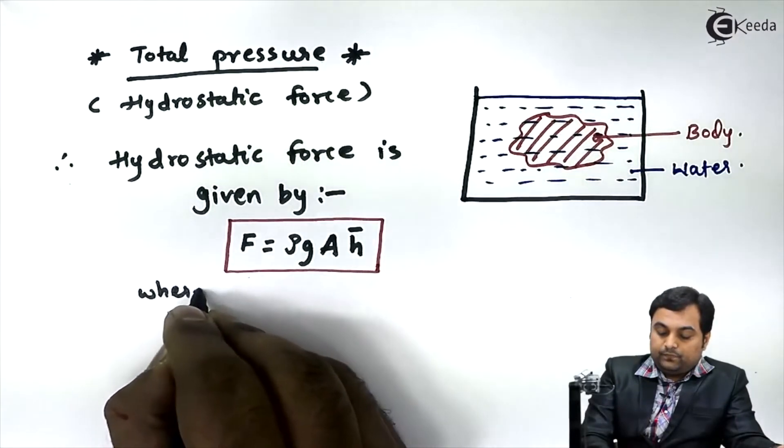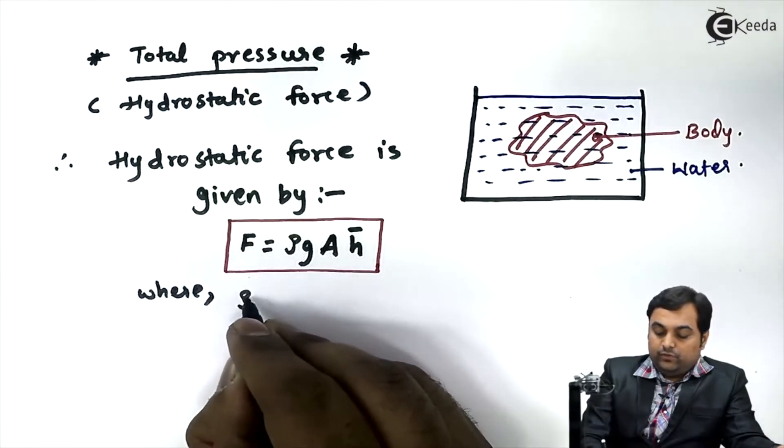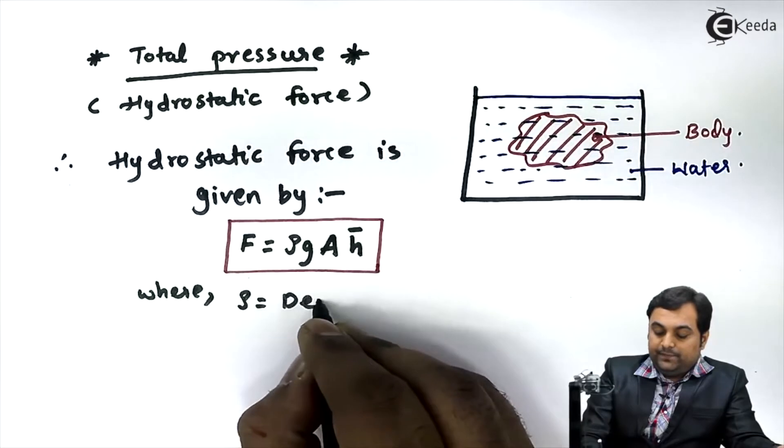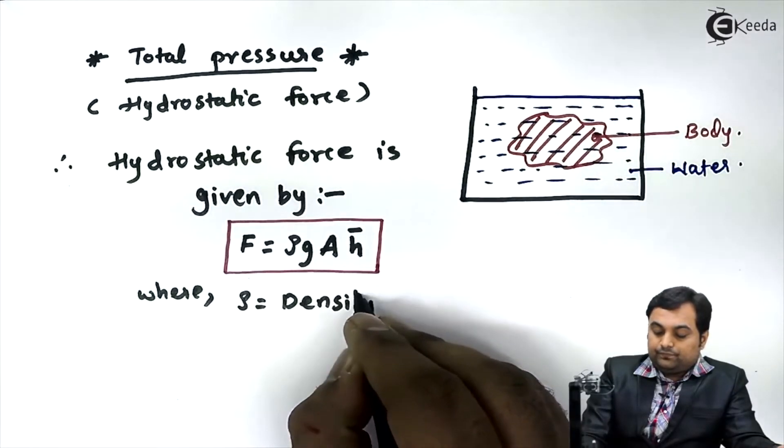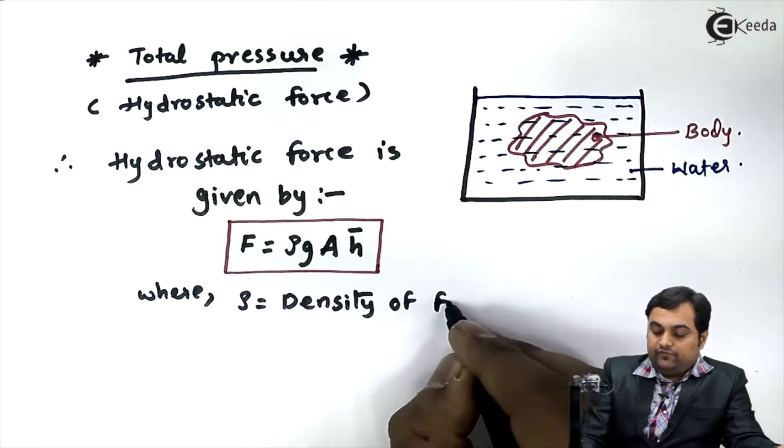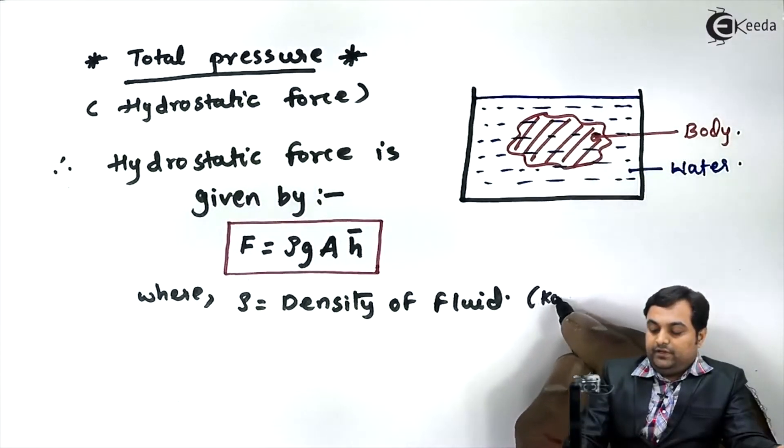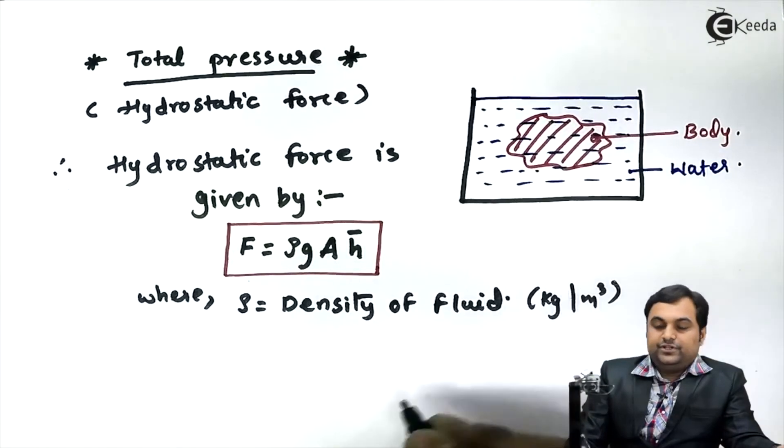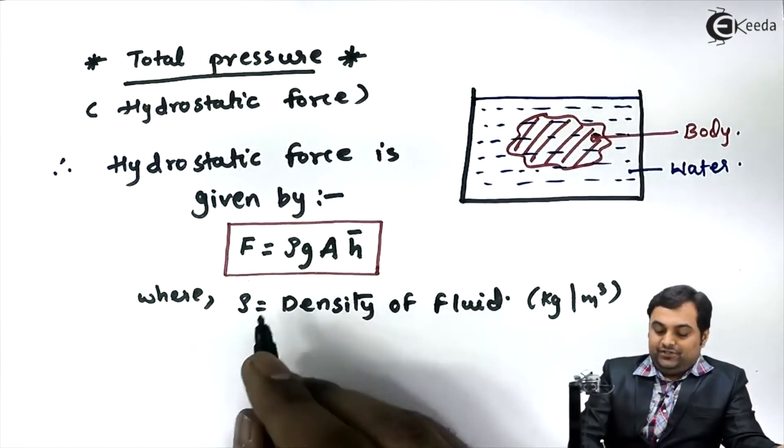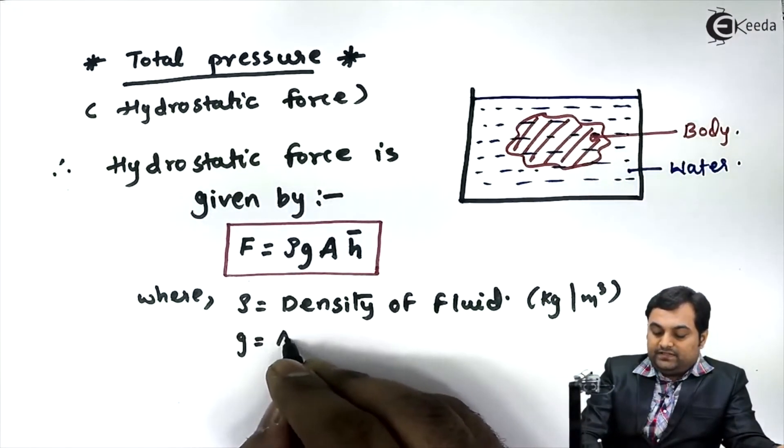ρ is the density of fluid in kg per meter cubed, since it is mass density. g is acceleration...